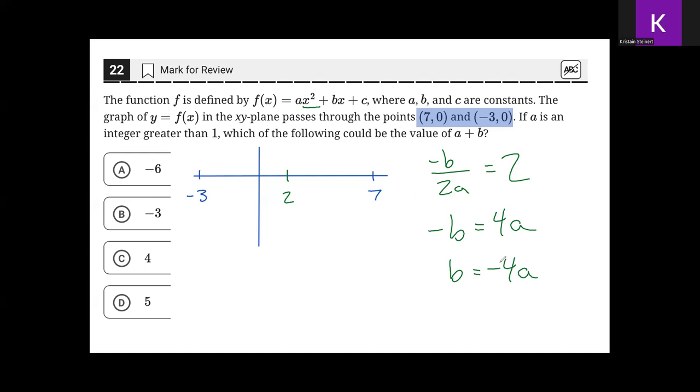So it is determined that whatever the constant b is, it will always be -4 times the value of a. The question is asking for the value of a + b. Since it is now known that b = -4a, we can substitute that value in for b to get a - 4a, which simplifies to -3a.